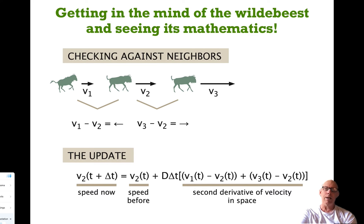Let's get into the mind of the wildebeest and see how some of the different terms that arise in the Toner-Tu theory do arise. If I'm the wildebeest labeled two with velocity v_2, the concept here for one-dimensional wildebeest organization is I'm going to check in with my neighbors. I'm going to look behind me at the wildebeest traveling at speed v_1 and take the difference between our two velocities. That difference is pointing to the left. I look ahead to wildebeest number three and take the difference between its velocity and my velocity, and that gives me a difference v_3 minus v_2 pointing to the right.